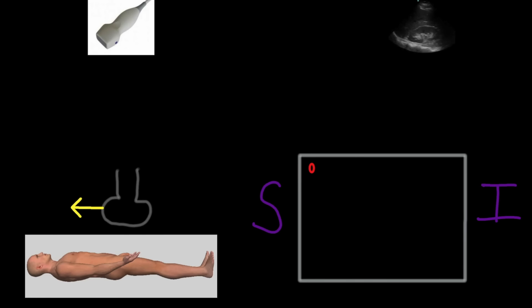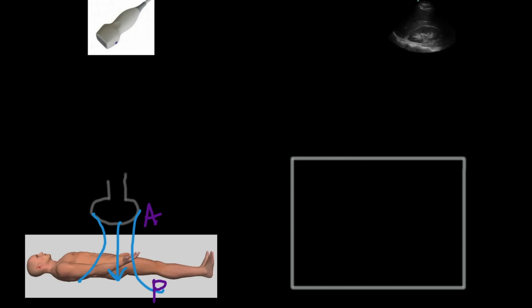Now let's look at what the top and the bottom of the screen correspond to. To do that, we have to think of our ultrasound probe as a flashlight. If I place my probe — my 'flashlight' — on the patient, where is the ultrasound beam shining from, and where is it shining to? In this case, the ultrasound beam is shining from the anterior of the patient toward the posterior. So the near field, or the top part of the screen, is anterior, and the bottom part of the screen is posterior.